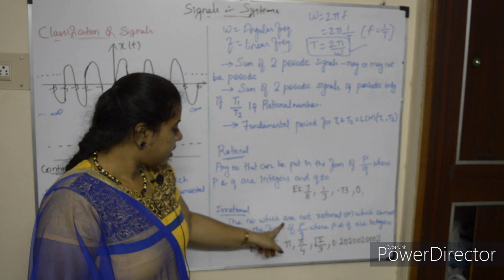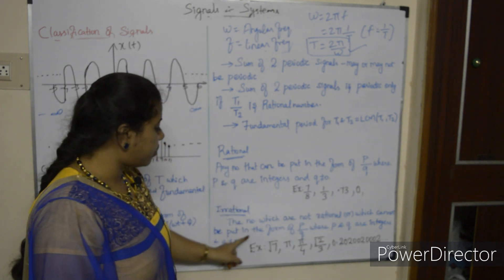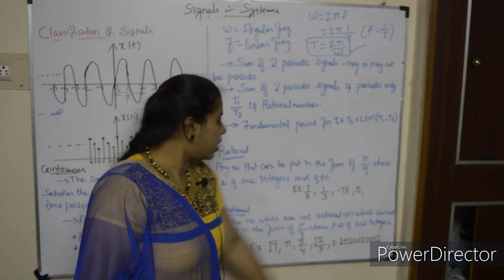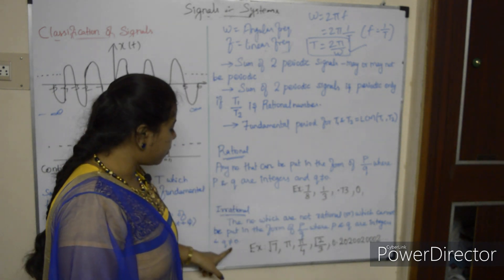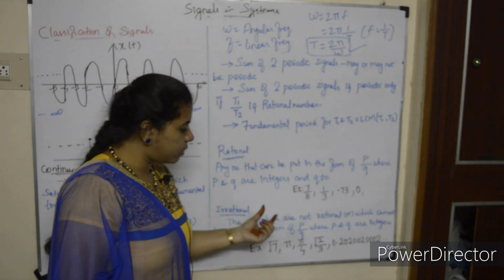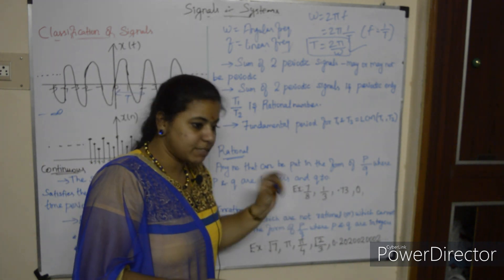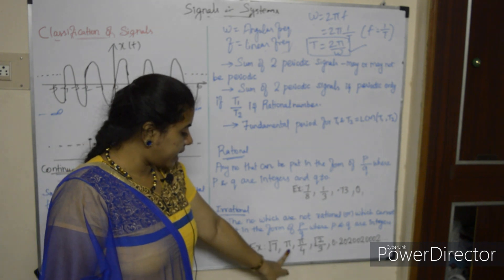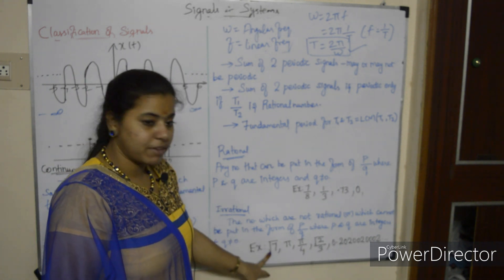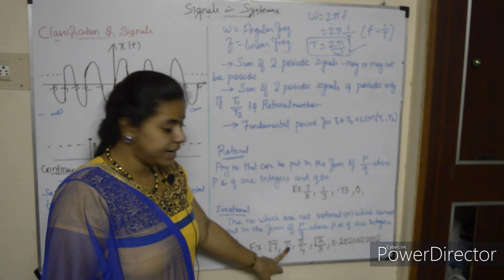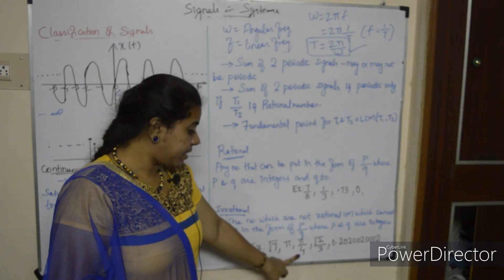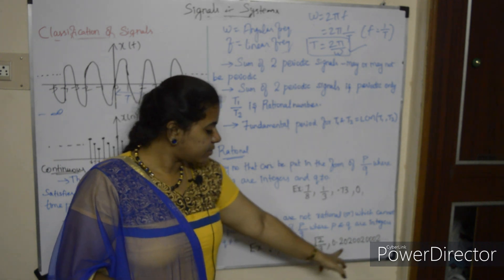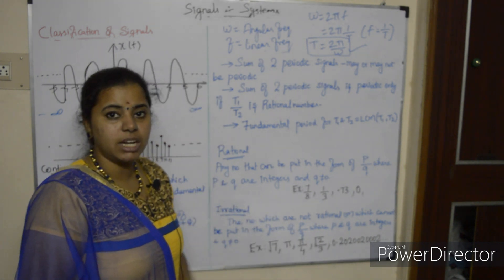Irrational numbers are those which cannot be put in the form p/q where p and q are integers and q ≠ 0. Examples: π, π/4, √7 (not an integer), √2/3. These are irrational numbers.